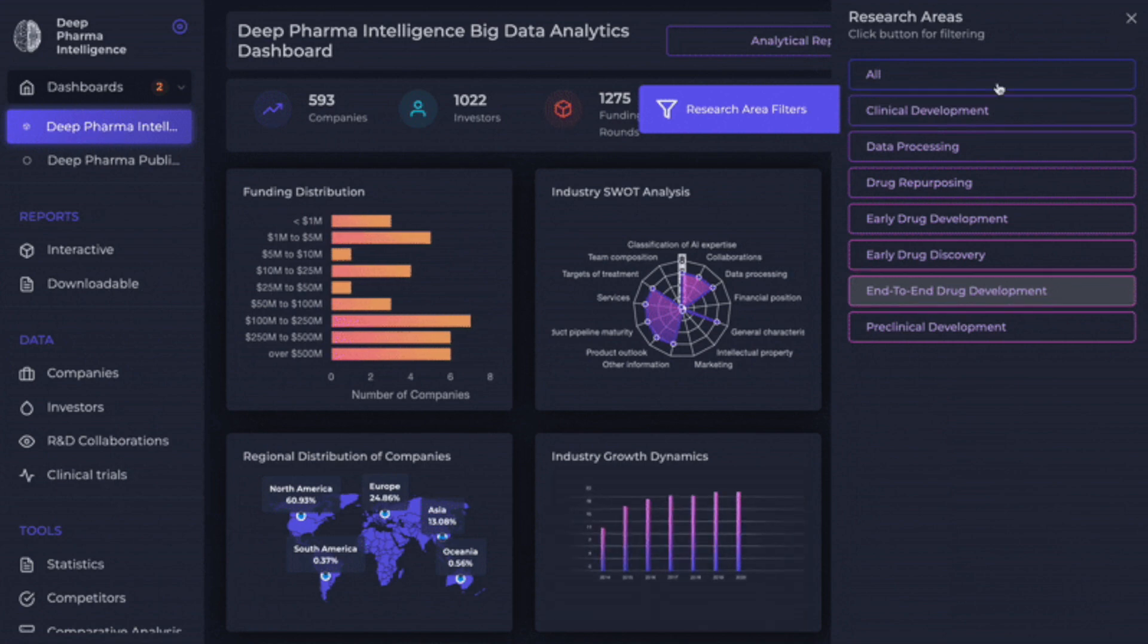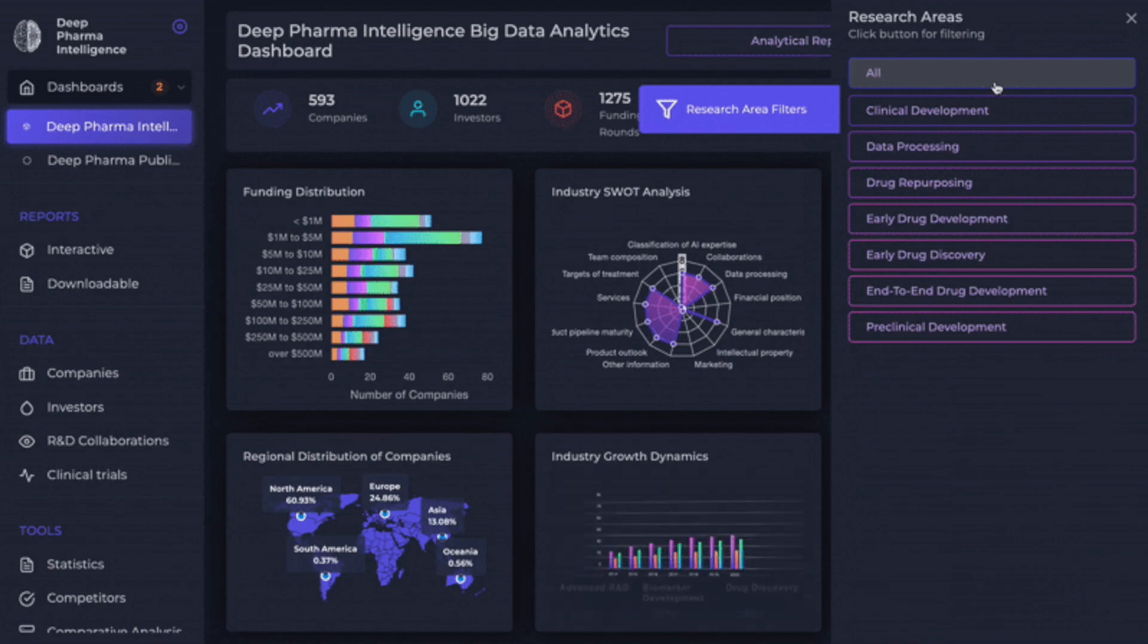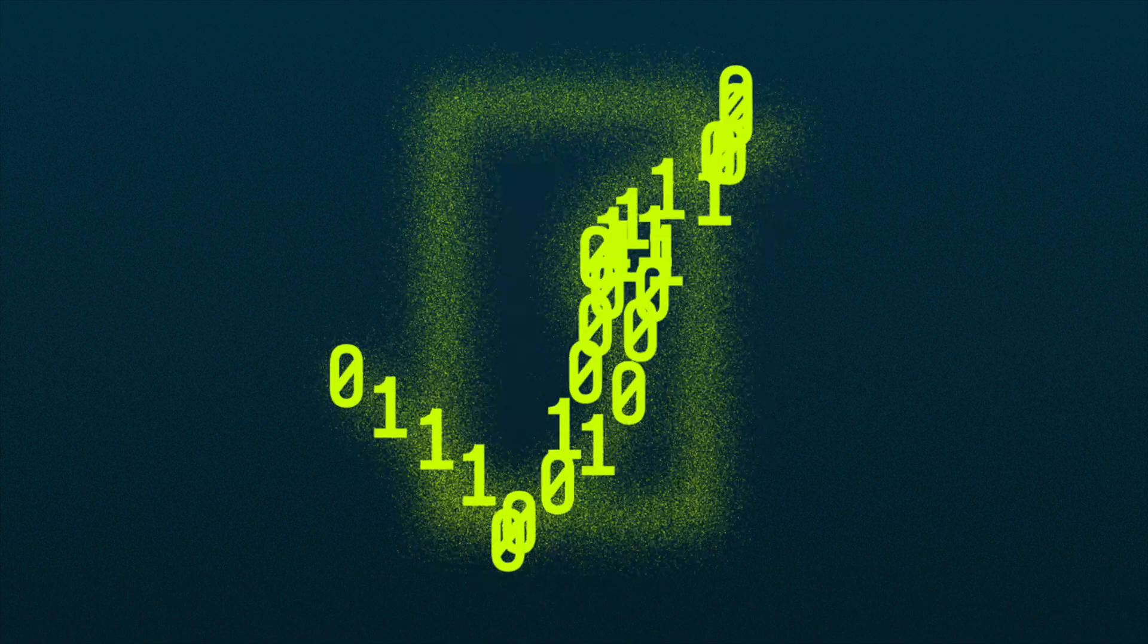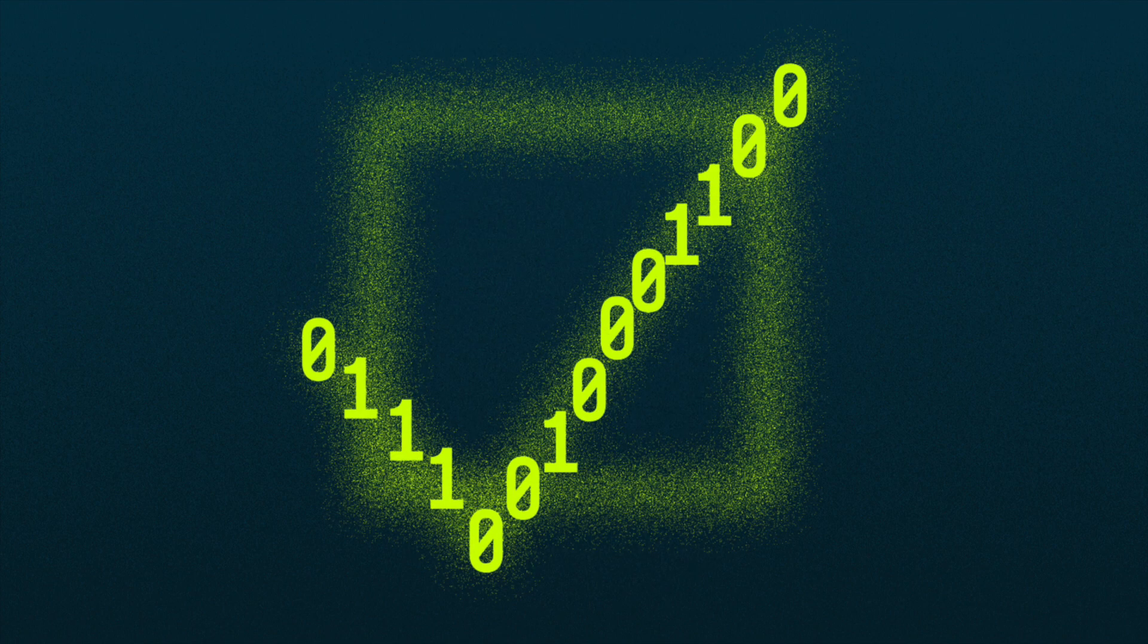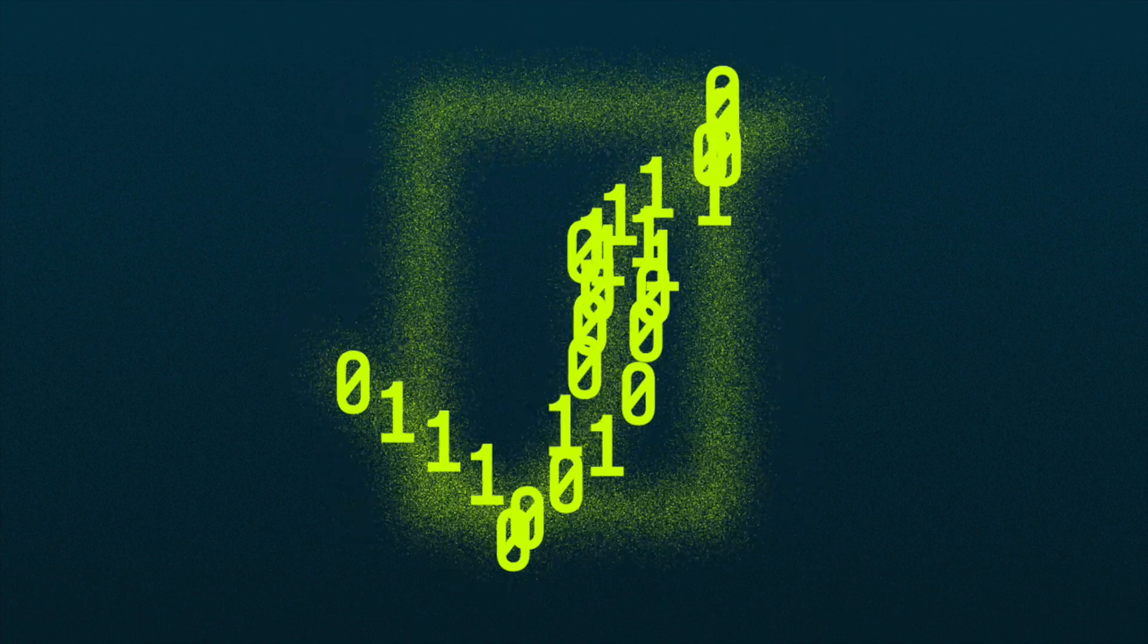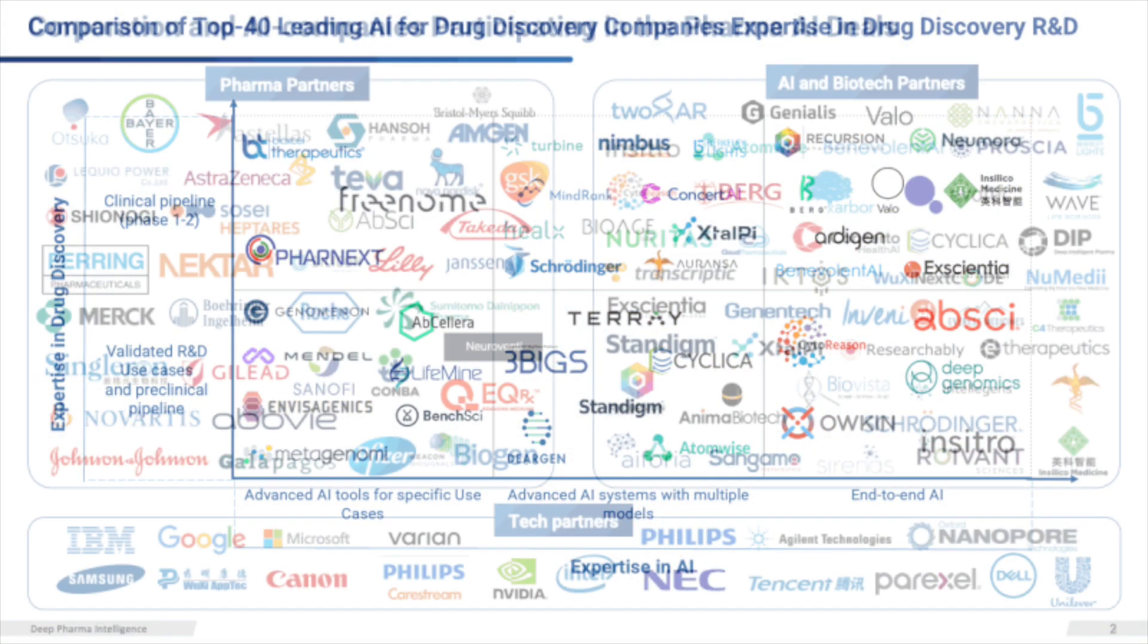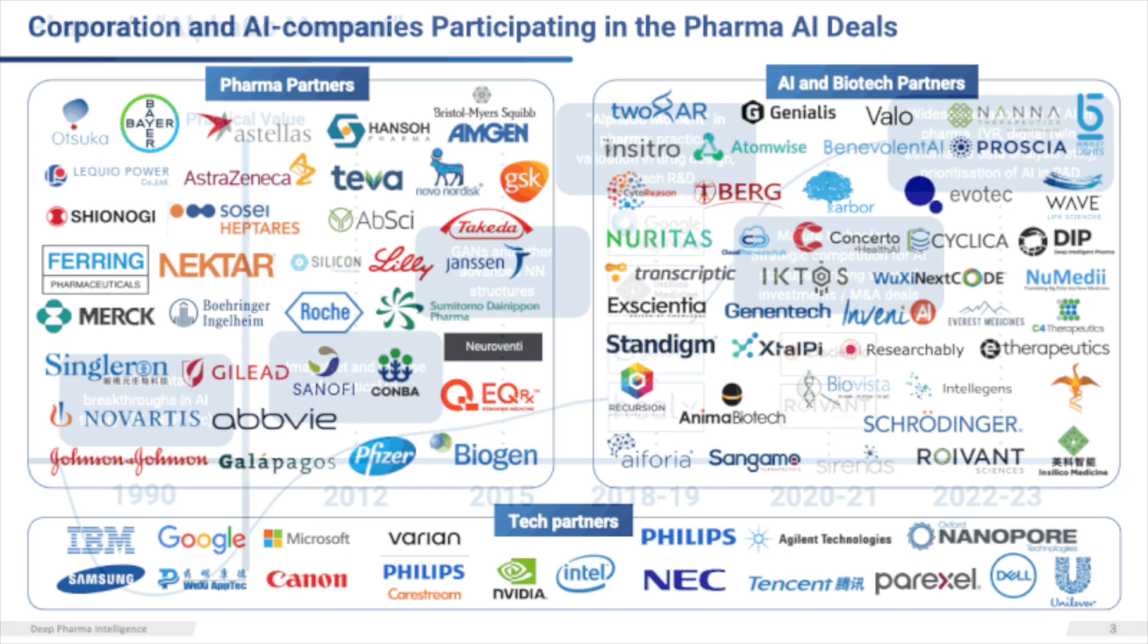But picking a target is just the start. The bigger challenge is designing a drug molecule that will do something with it. And this is where most innovation is happening. Generative Biomedics, a startup in Cambridge, Massachusetts, founded by Flagship Pioneering, is using the same kind of generative AI behind text-to-image software like DALL-E 2.